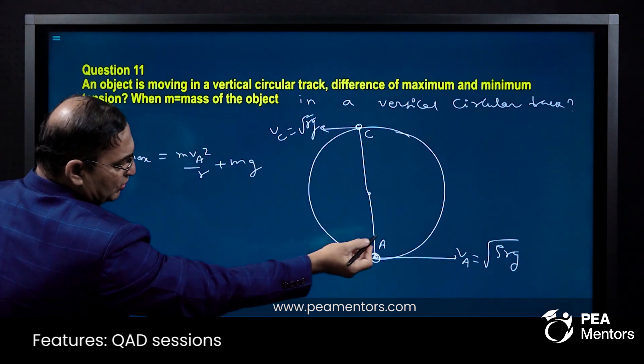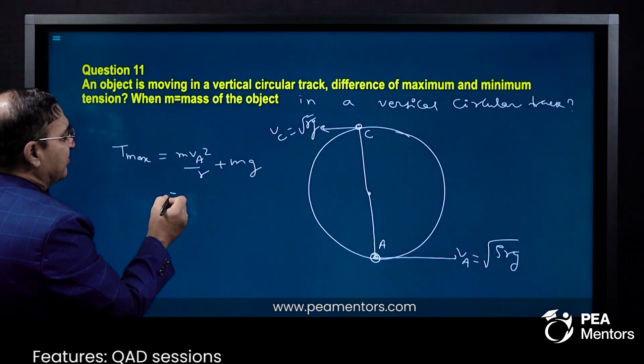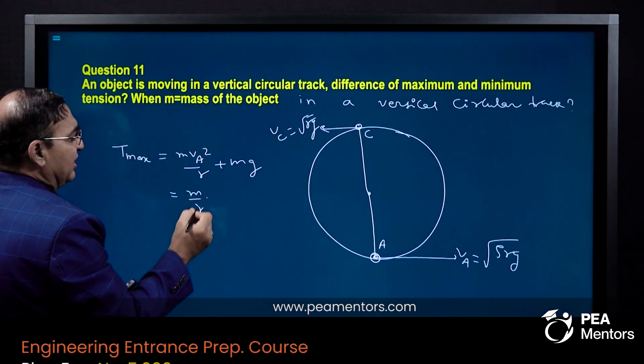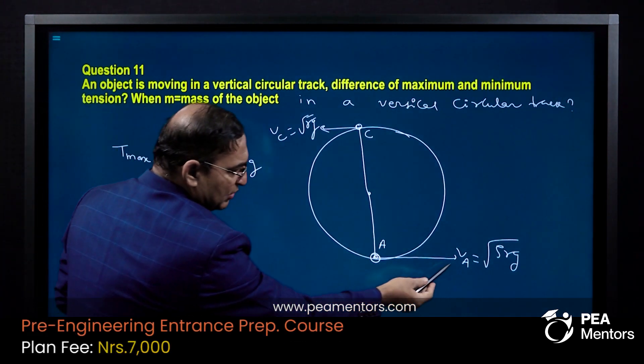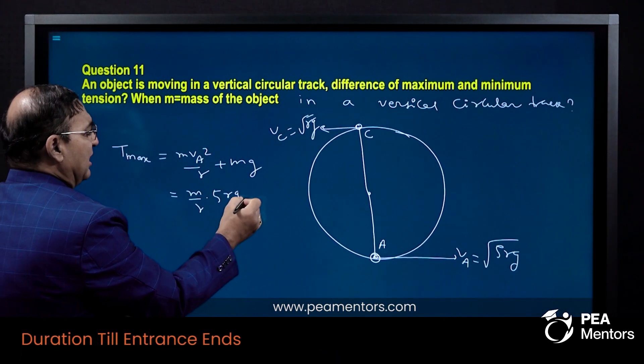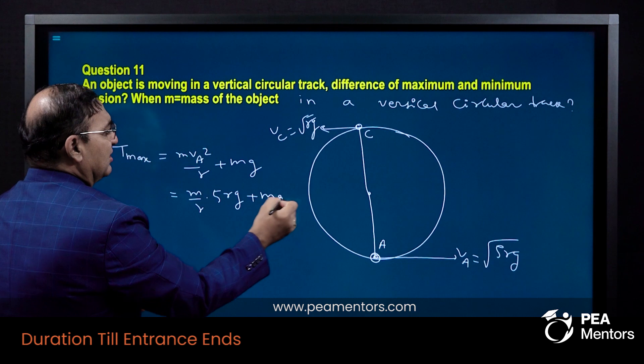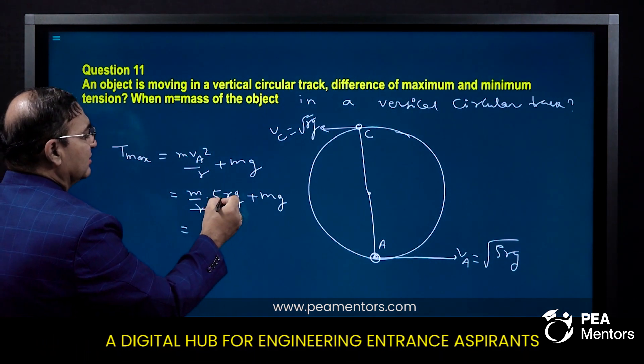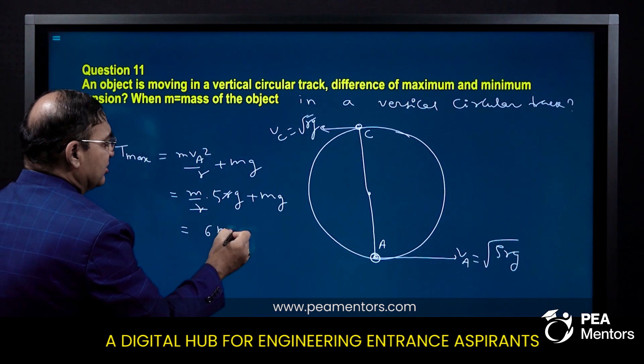Here VA equals root over 5RG. Plugging in the value of VA, M by R, VA squared. VA root over 5RG, so VA squared is 5RG. 5RG plus MG equals 6MG. R cancels. So we are left with 6MG.